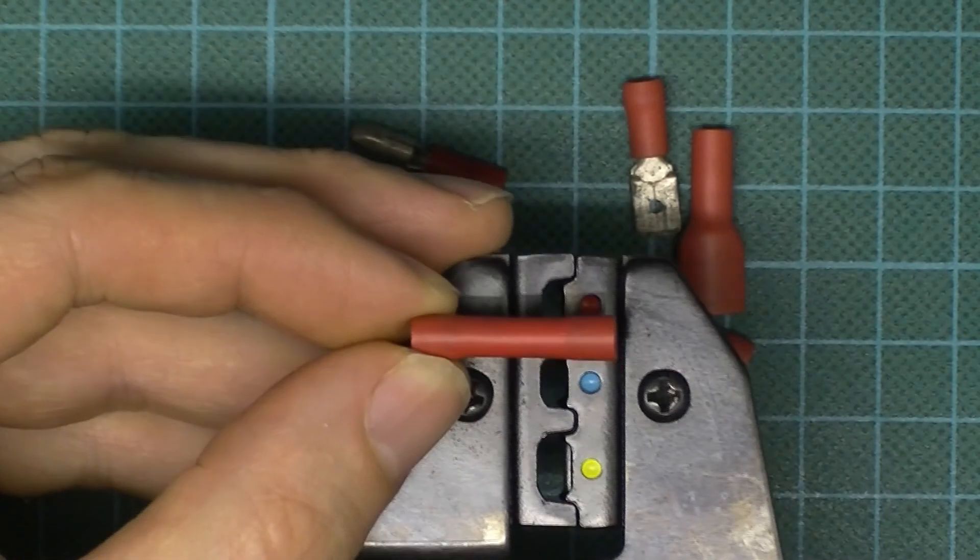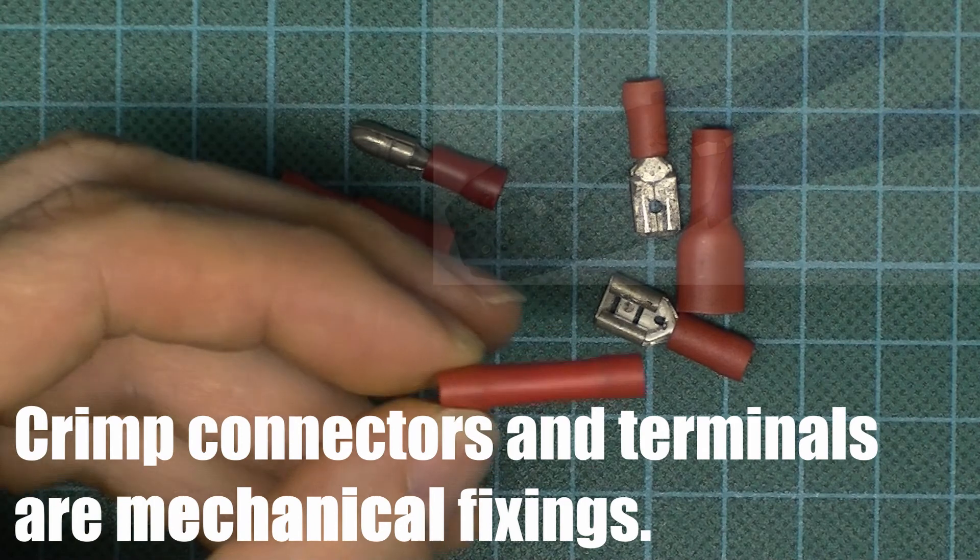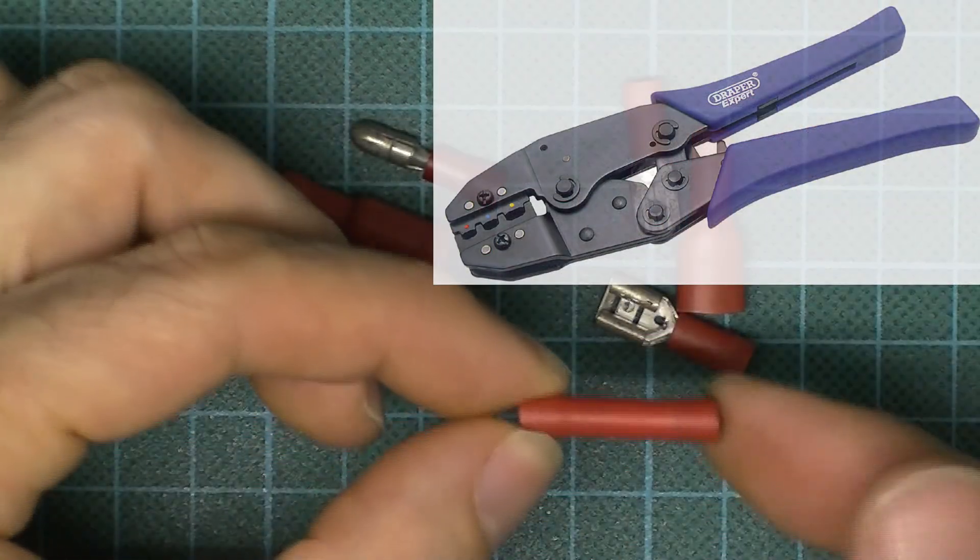It's basically just a set of pliers but specialized for the job, and it's going to squeeze down and make a permanent connection with the two wires that are butted together.